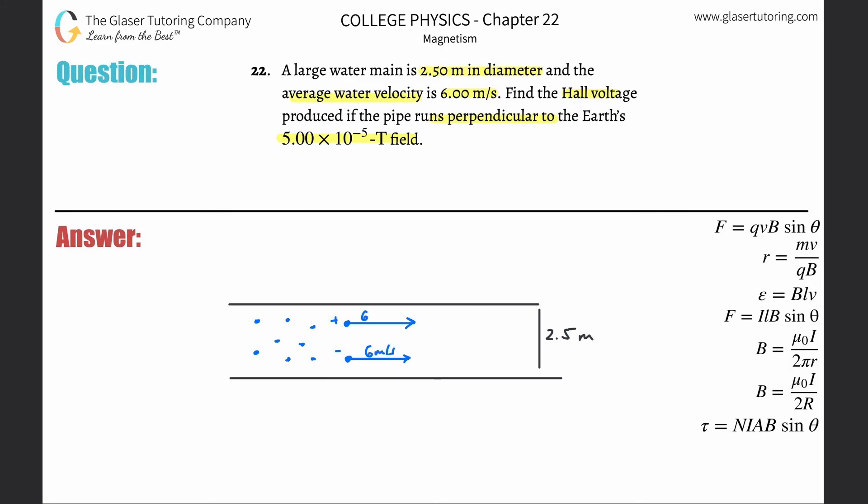They told us in the problem that that velocity is going to be 6 meters per second. Now they also mentioned that these charged particles are moving perpendicular to the magnetic field. They didn't tell you which direction, so let's just make an assumption. Let's just pretend that the magnetic field here is pointing into the page all around. I could also show it here inside the pipe, but I'm not going to, to leave it clean.